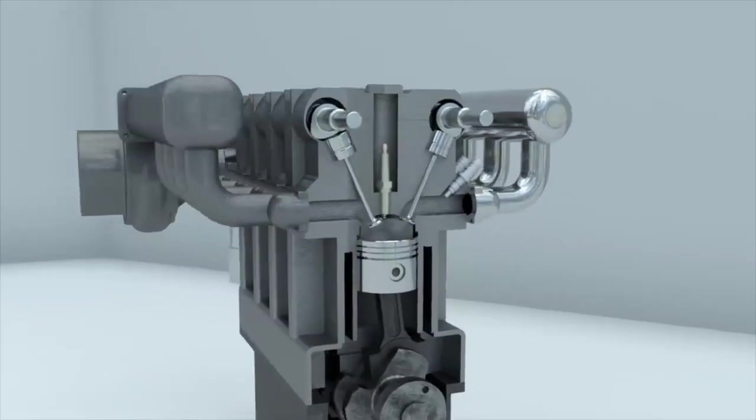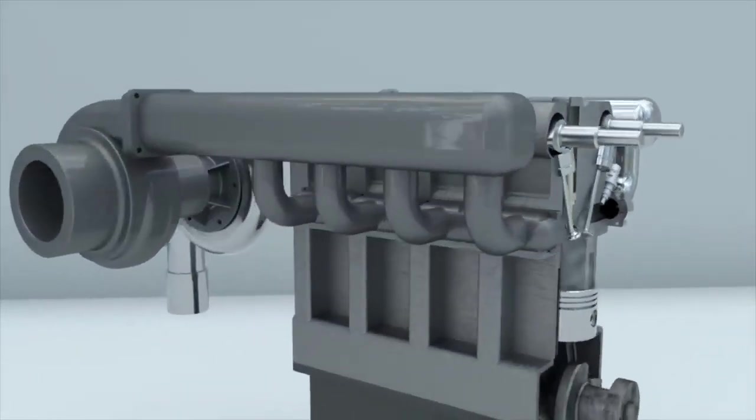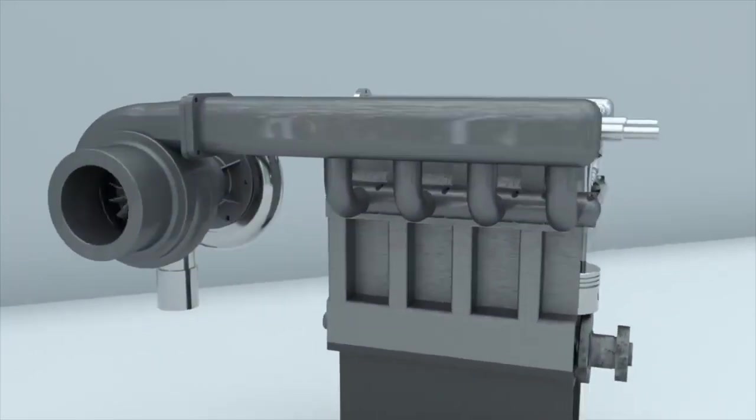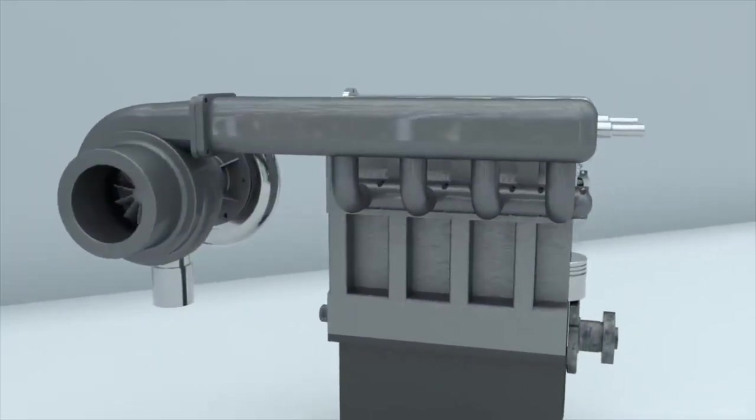The turbine and compressor wheels are mounted on one shaft. When the turbine wheel rotates, the compressor wheel also rotates, forcing air into the engine's cylinders.